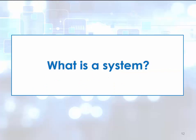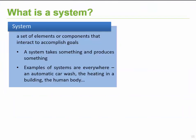We're going to continue and look at how we can take information, data, and knowledge and use it in a system context. First of all, we need to talk about what is a system. A system can be defined as a set of elements that will help us to achieve a goal. These elements typically interact with each other, and a system takes something in and produces something.